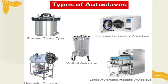These are the different types of autoclave: the pressure cooker type, vertical autoclave, horizontal autoclave, large automatic hospital autoclave, and common laboratory autoclave. Autoclaving employs steam under pressure. Water normally boils at 100°C; however, when put under pressure, water boils at a higher temperature. During autoclaving, materials to be sterilized are placed under 15 pounds per square inch of pressure. When placed under 15 pounds of pressure, the boiling point of water is raised to 121°C, which is a temperature sufficient to kill bacterial endospores.